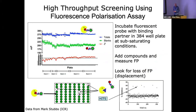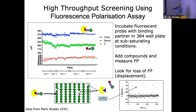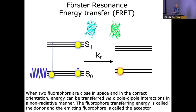Another way of using fluorescence polarization is in high-throughput screens. You have a reporter that binds onto an enzyme and you get an increase in polarization when that binds. In 384-well plates you can screen a library and look for positions where you don't get an increase - or get a decrease - in polarization because a small molecule has displaced the labeled reporter.